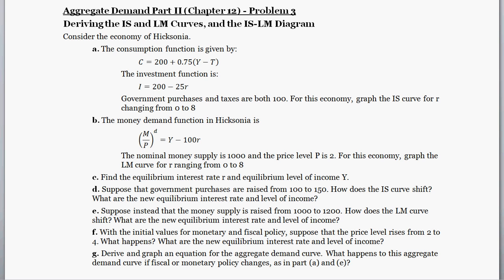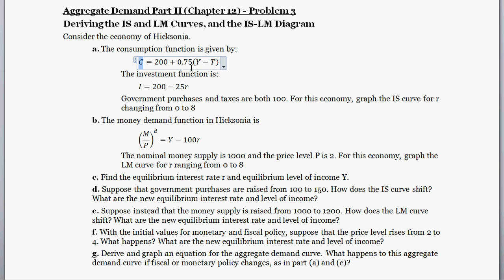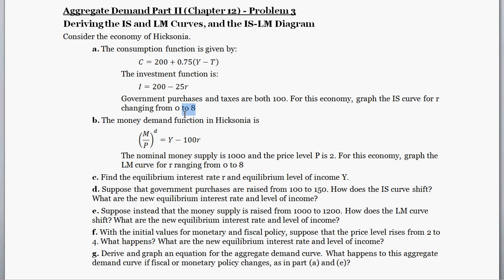So let's get to the problem. Part A considers the economy of Hyksonia. We have a consumption function where consumption equals some baseline of 200 plus the marginal propensity to consume times disposable income — that is income minus taxes. Here's our investment function: investment equals a baseline level of investment negatively related to the real interest rate. Government purchases is 100, and part A asks us to graph the IS curve for R ranging from 0 to 8.